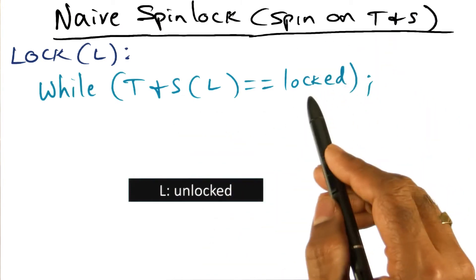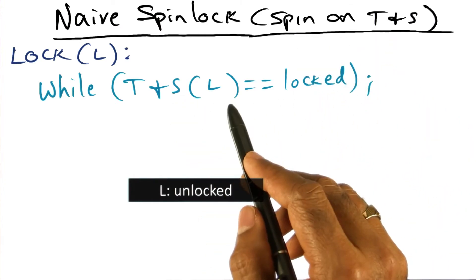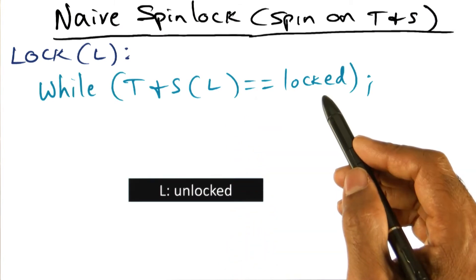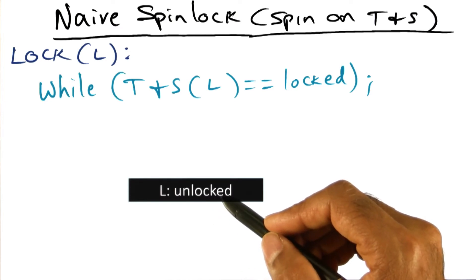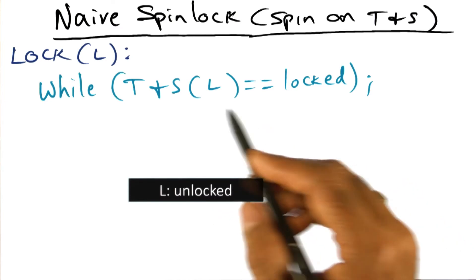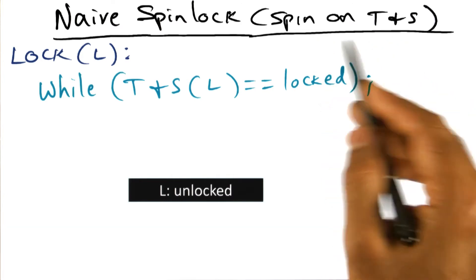You're basically spinning, waiting for this test and set instruction to return to me a value that says the old value is unlocked. If it gets me the old value is unlocked, then I know I won. But if I don't, then I'm going to wait here. That's why it's called spinning on test and set.